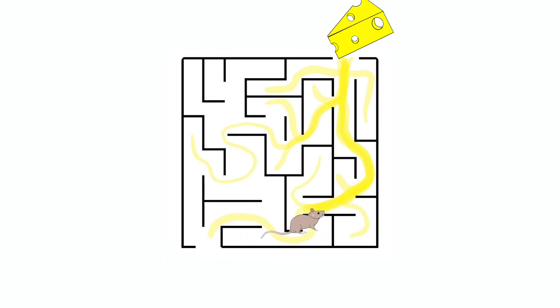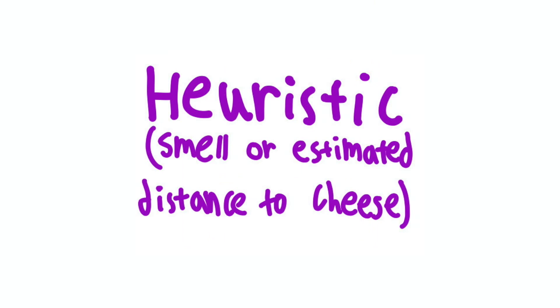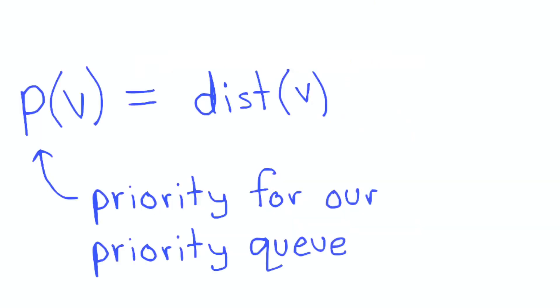So the heuristic is allowing us to prioritize our options when multiple are presented to us, and it's giving us a rough estimate or an idea of how far we are from the goal. So if we prioritize the distance from the start state plus our heuristic, this gives us an estimate of the total path length, and our goal would be to minimize this total path length.